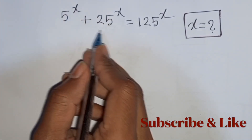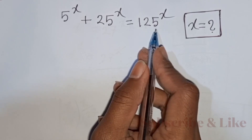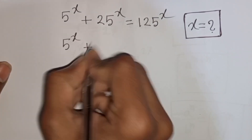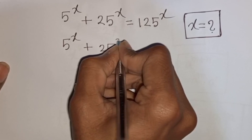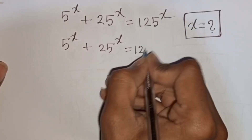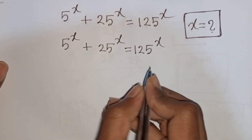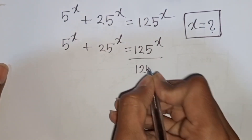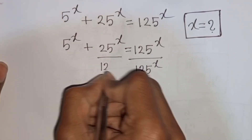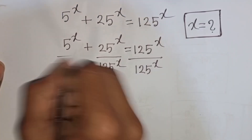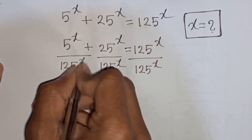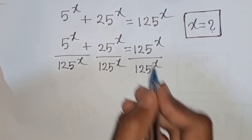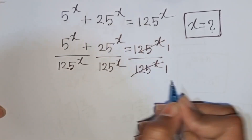How to solve 5 power x plus 25 power x is equal to 125 power x. Find the value of x. We have 5 power x plus 25 power x is equal to 125 power x. Now we divide by 125 power x on both sides. This 125 power x will be cancelled.